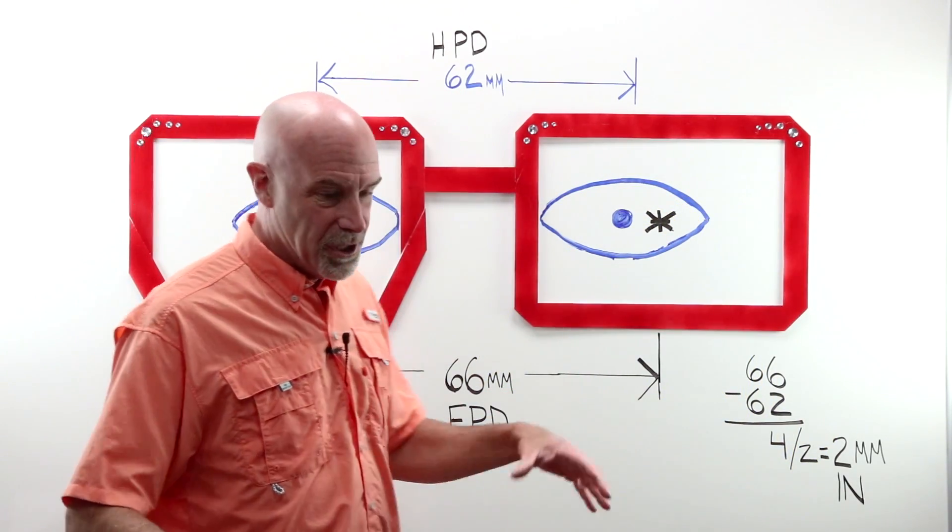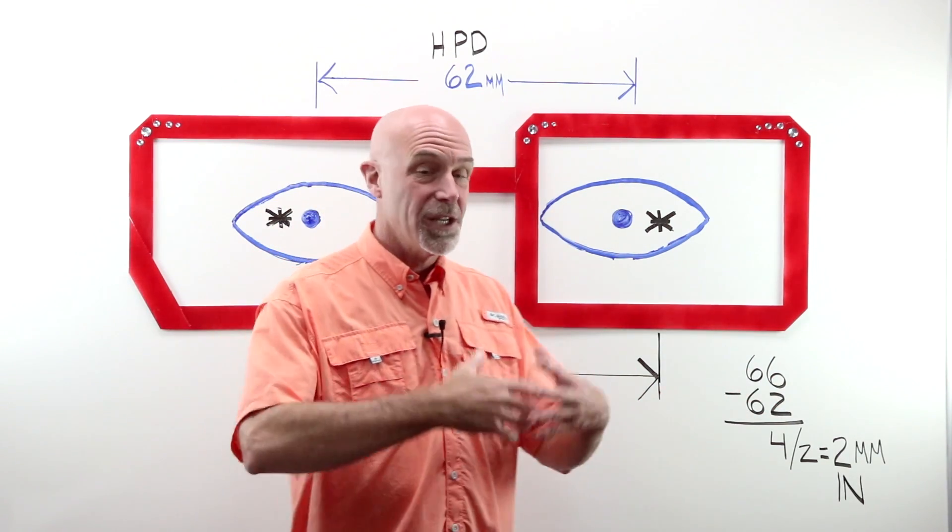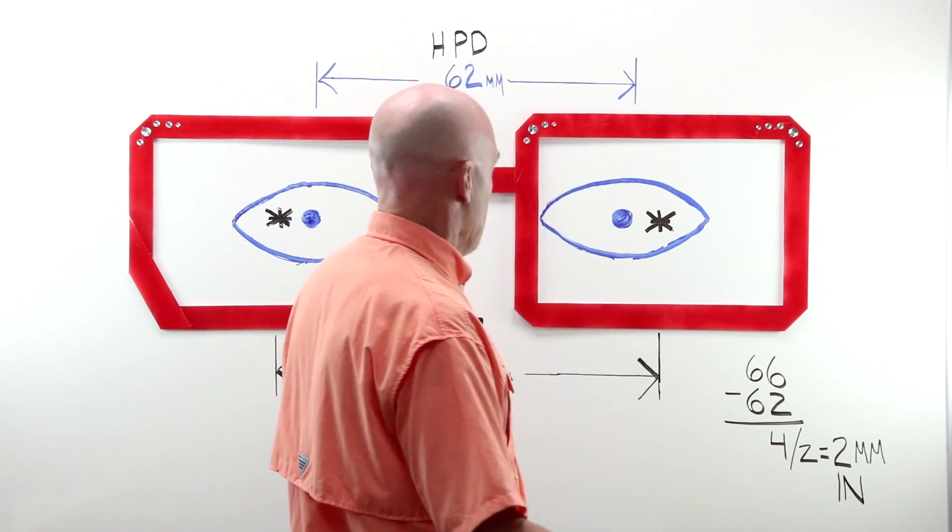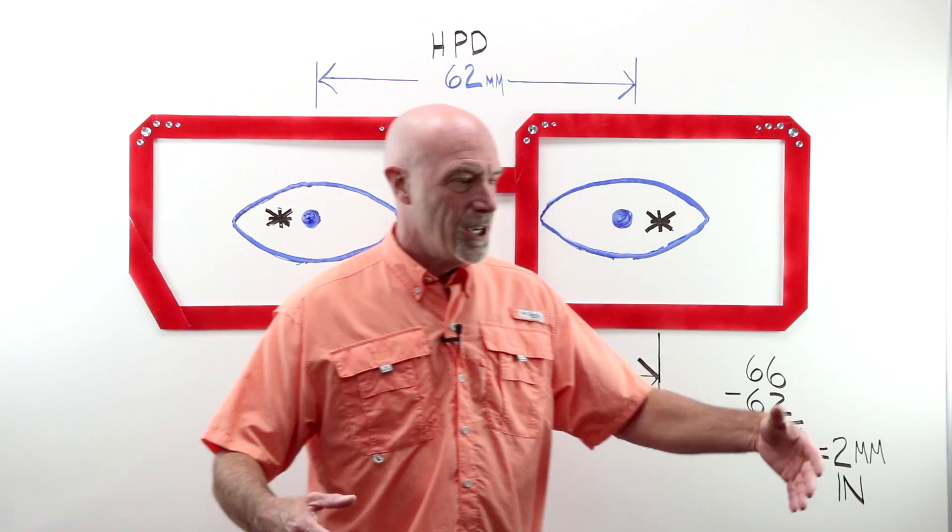What is decentration? It is the absolute rock-bottom, fundamental beginning of the understanding of all finishing layout work. Why would you need to know this? Why would you need to de-center a lens?